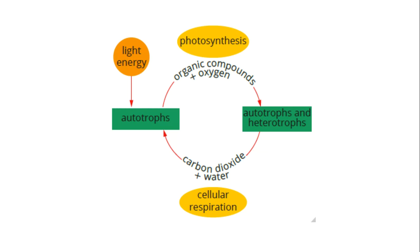Here we can see that the processes undertaken by autotrophs and heterotrophs occur in a cycle, and we can see that they both include and require the processes of photosynthesis and cellular respiration to keep this cycle going.